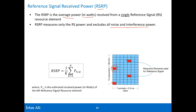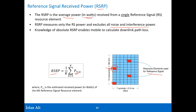The way the mobile finds out the power in each reference signal is that it measures the power in all the reference signal resource elements and averages over all cases, arriving at the RSRP it is receiving in watts in the downlink. This enables the mobile to find out what the downlink path loss is — pretty important because it figures out how far it is from the base station and reports it in the uplink. The base station transmits the reference signal at a known power, and the UE receives it.